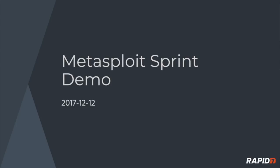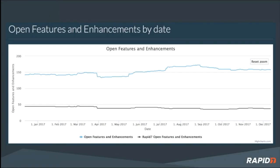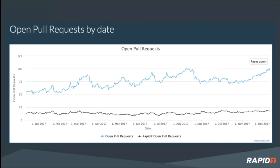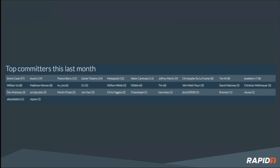Welcome to the Metasploit sprint demo meeting for December 12, 2017. Looking at stats here — open features and enhancements by date over the last year, we're retaining a fairly flat trajectory, coming down a little since August. Open pull requests are still hitting high, about as high as August — that's a good problem to have, so appreciate all those PRs coming in. Here's the latest leaderboard over the last four weeks, big thanks to everybody on there.